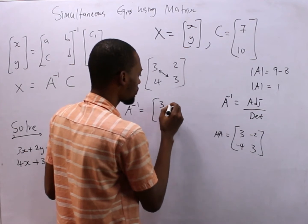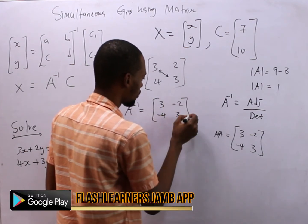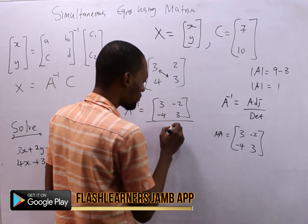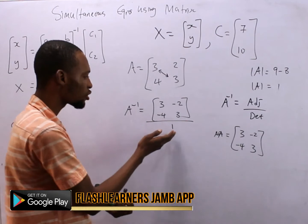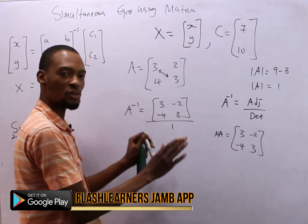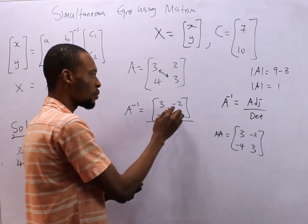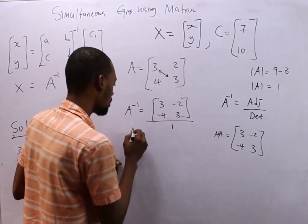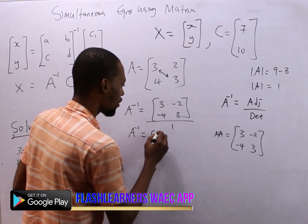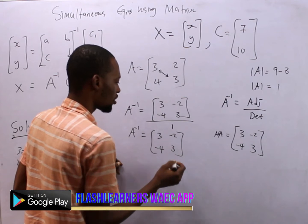So this is the adjoint. Now what is the inverse? Inverse is simply divide this adjoint by determinant. So 3, minus 2, minus 4, 3 over the determinant which is 1. So if it were 2, you divide everything here by 2, but now it's already 1. So 3 divided by 1 is 3, minus 2 divided by 1 is minus 2. Therefore A inverse equals 3, minus 2, minus 4, 3.